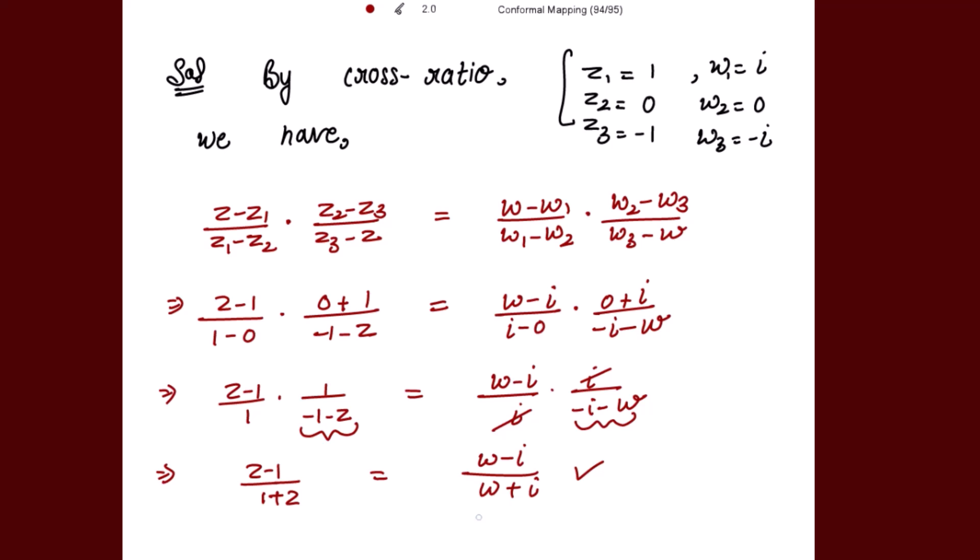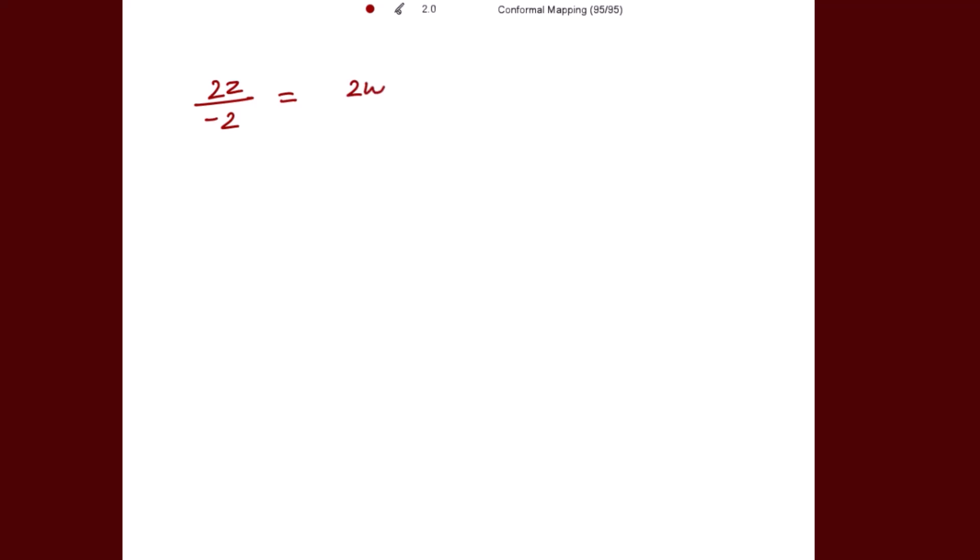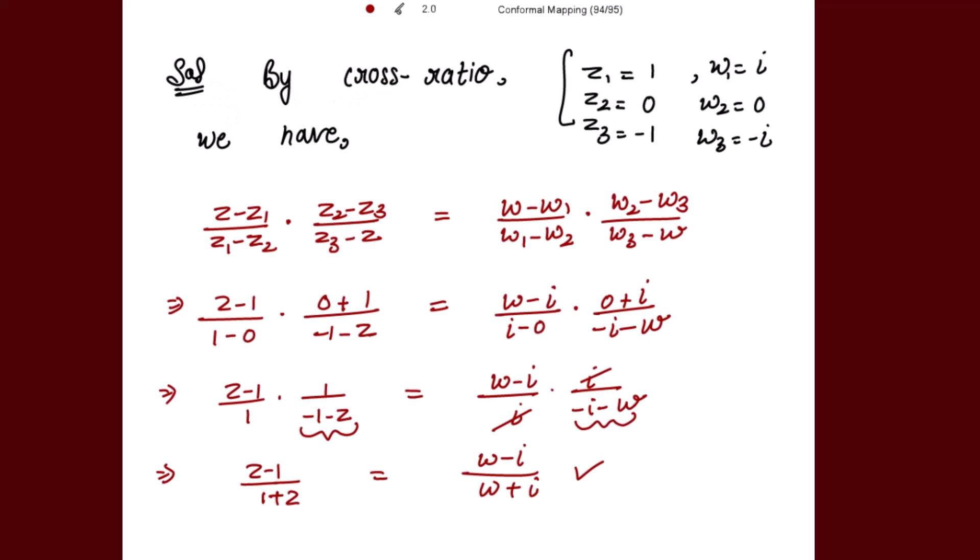Similarly applying on the right side: adding numerator and denominator we get 2w, and subtracting numerator from denominator gives -2iota.